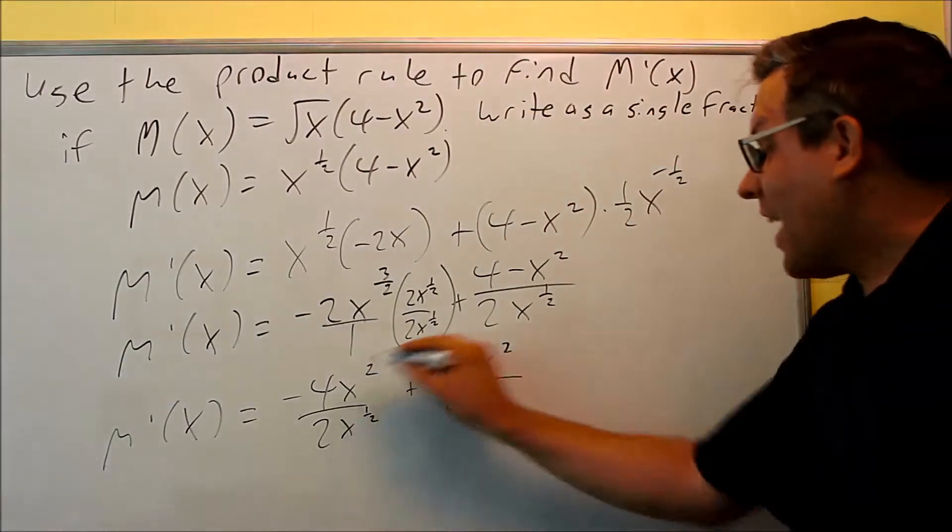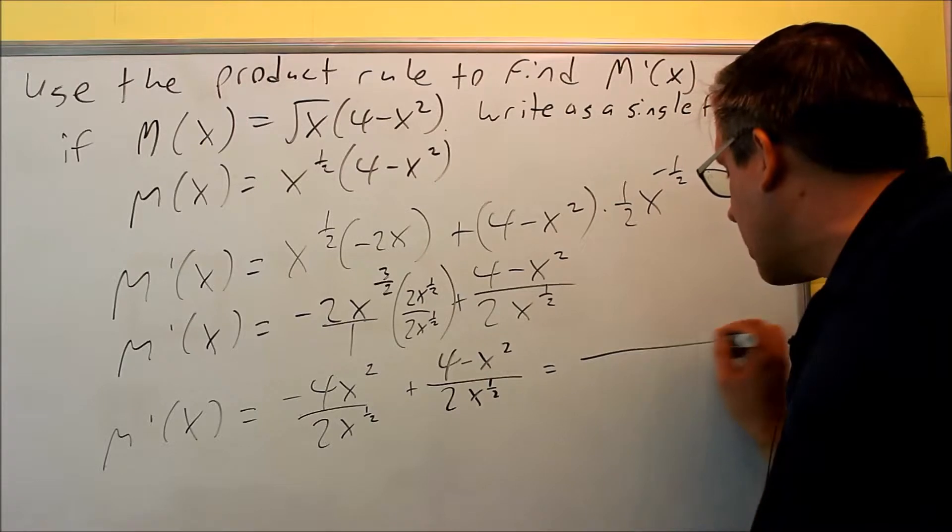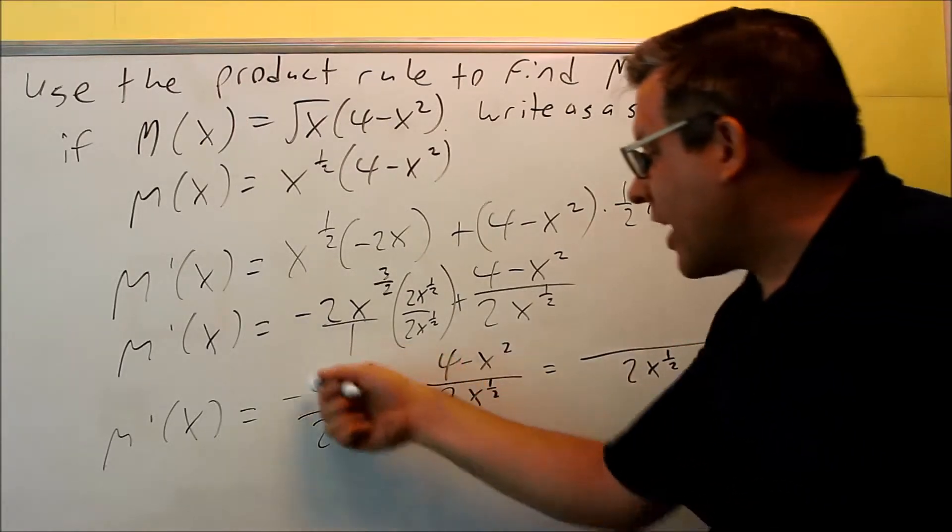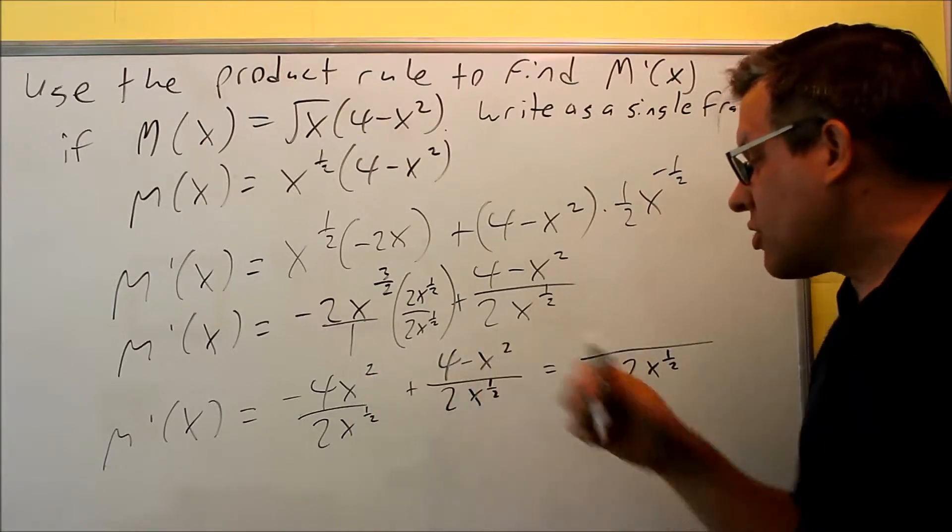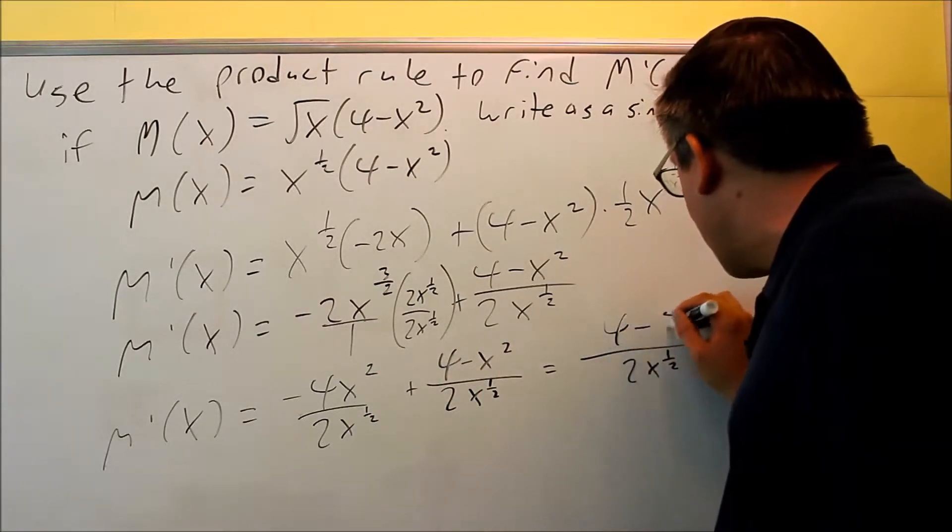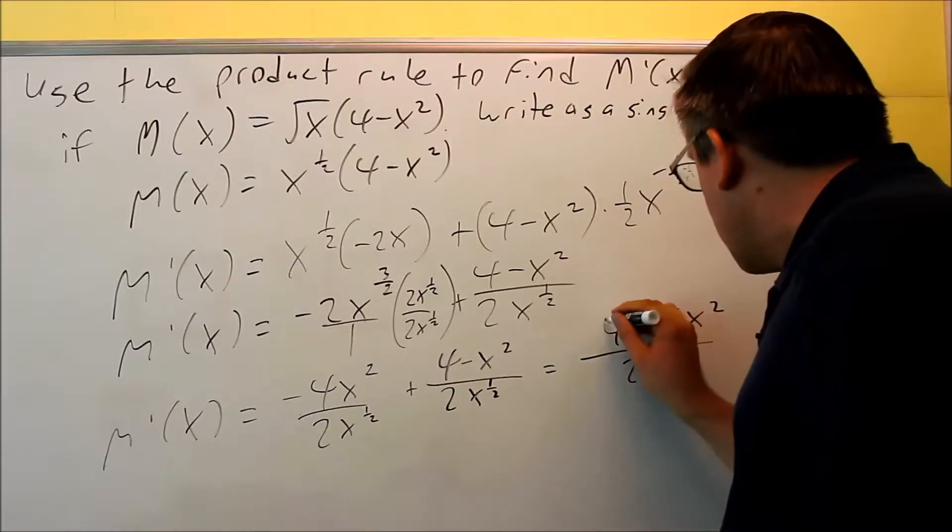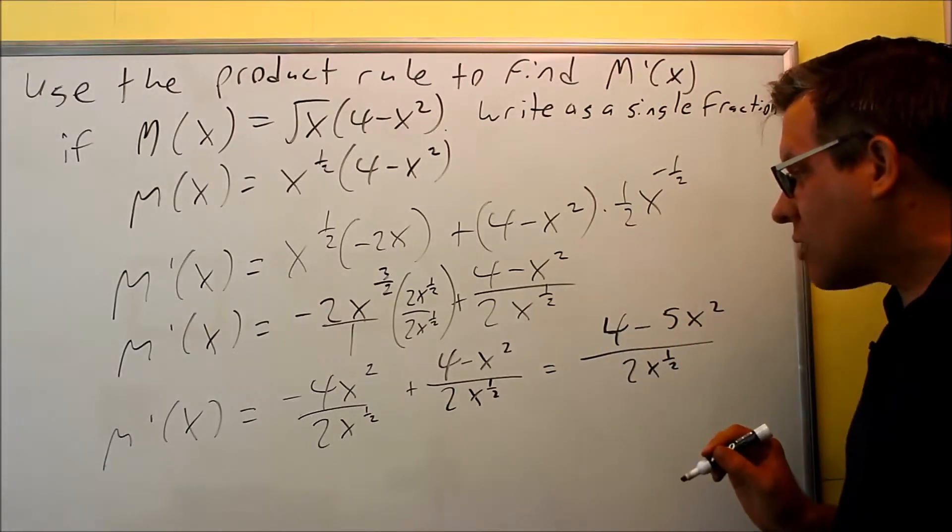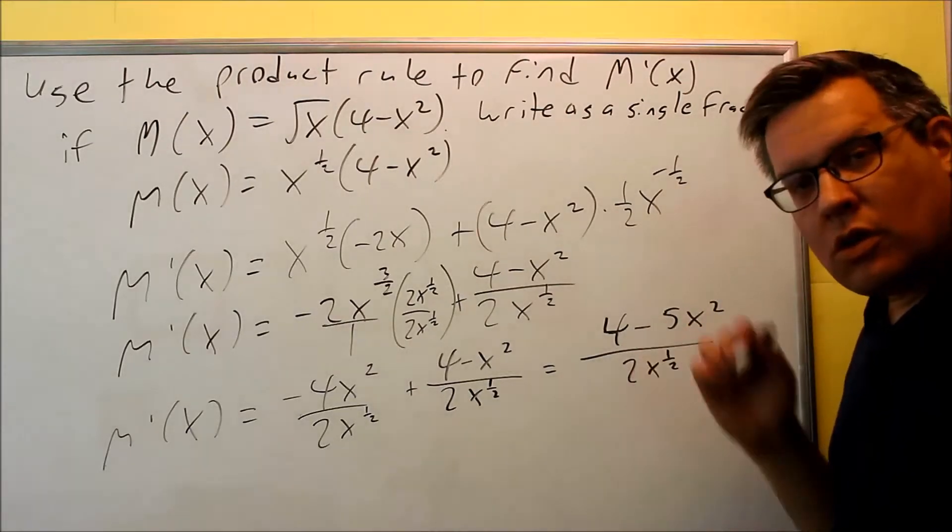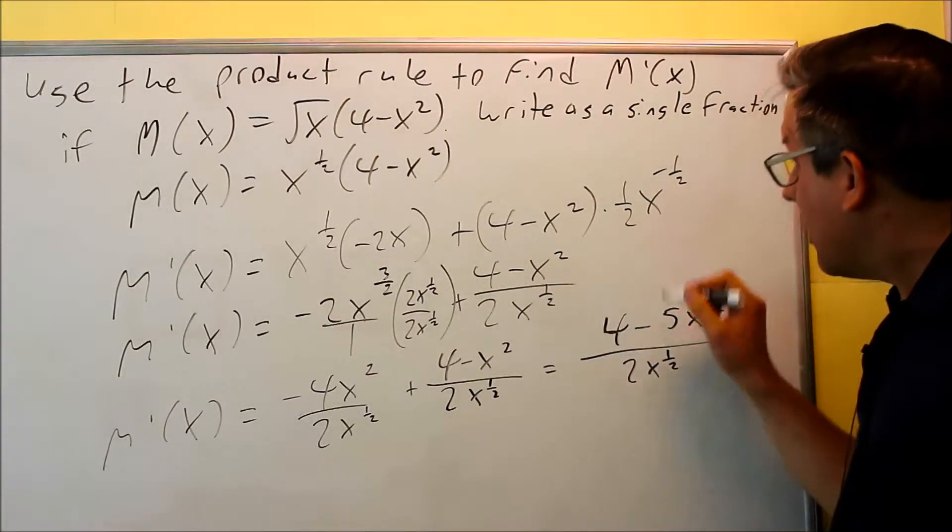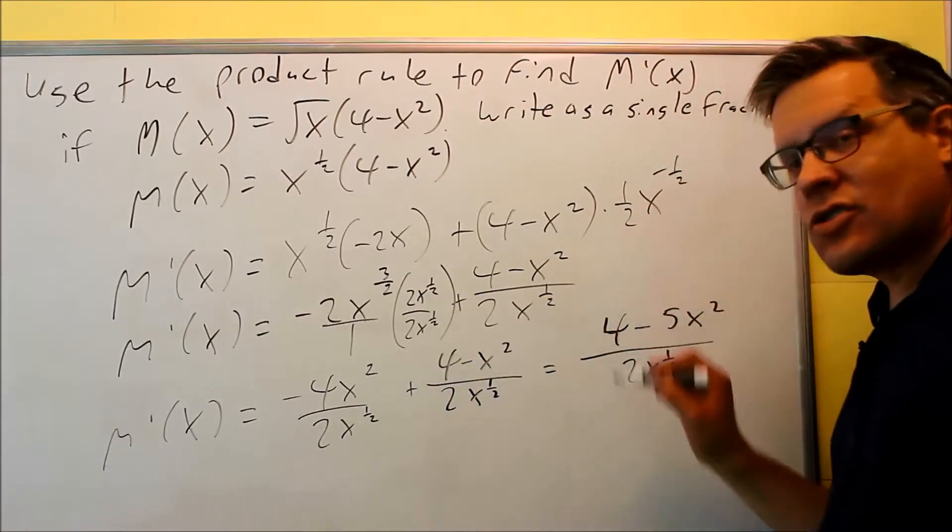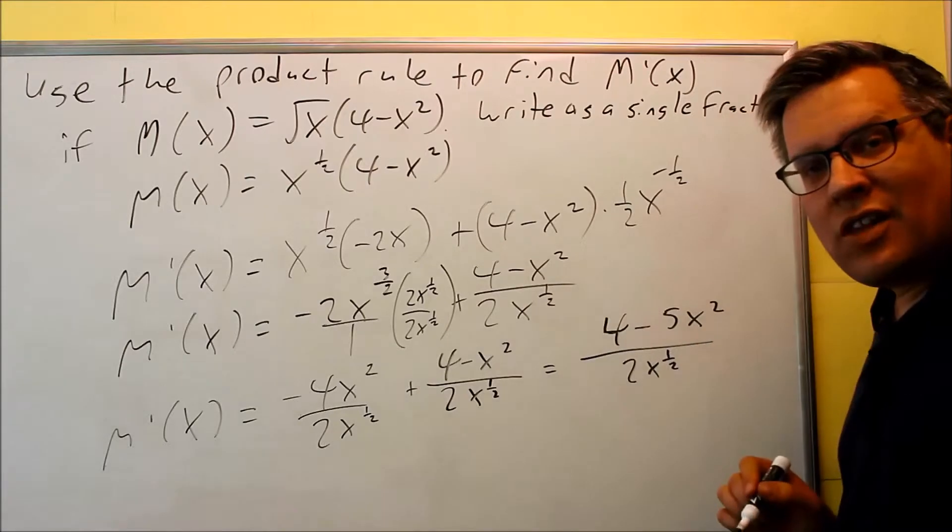Okay, now I need to add all that together on top to write it over one single fraction, which is two x to the one-half. On top I have a negative four x squared minus a one, that'll be minus five x squared, so I can write this as four minus five x squared. And the bottom one you can either keep it as the one-half power, or if you'd like to change that back into a square root, you can do that as well. But mainly it is a single fraction because we combine it together, both fractions combine into a single one, so that answers the question.